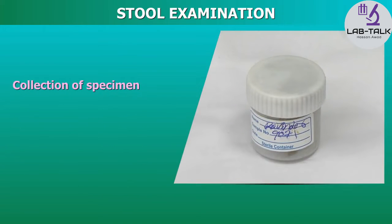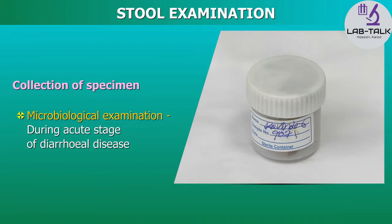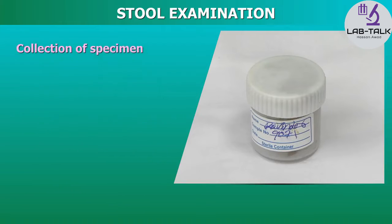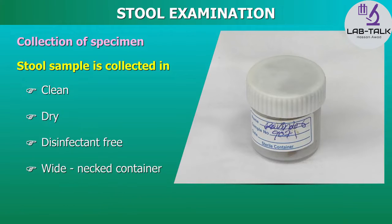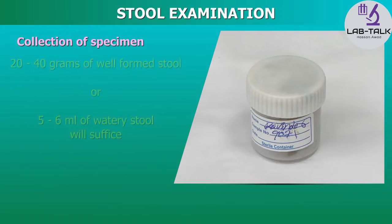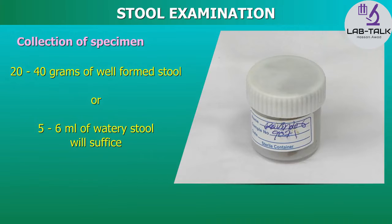Collection of the stool specimen: The feces for microbiological examination should be collected during the acute stage of the diarrheal disease. Ask the patient to pass the stool sample in a clean, dry, disinfectant-free, suitable wide-necked container or a plastic cup with a tight-fitting lid. About 20–40 grams of well-formed stool or 5–6 ml of watery stool will suffice for a routine examination.